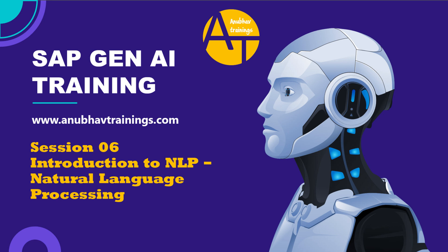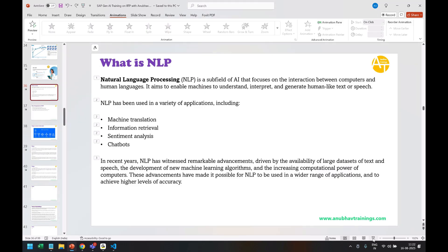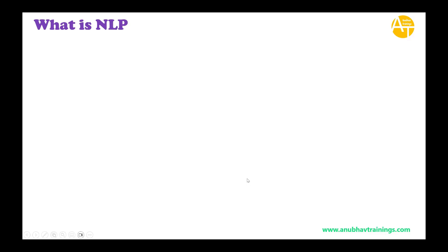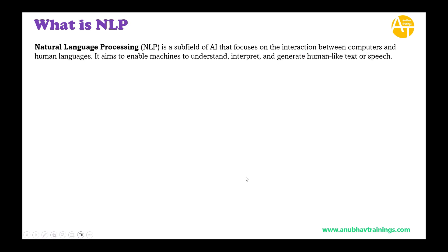What is NLP and where and when do we use Natural Language Processing? First, the definition: Natural Language Processing is the subfield of AI that focuses on the interaction between computers and human languages. It aims to enable machines to understand, interpret, and generate human-like text and speech.